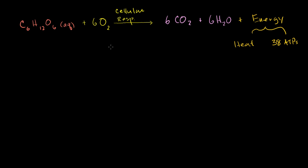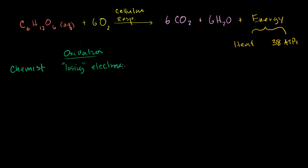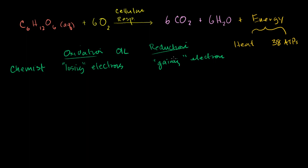In the last video, we learned a little bit about oxidation and reduction, so let's apply those ideas here. A chemist would say that oxidation means losing electrons, or not being able to hog them, while reduction is gaining electrons. And if you have trouble remembering: oxidation is losing — that's the OIL part of the mnemonic — and reduction is gaining, or RIG. So OIL RIG. This is what you learn in chemistry class.